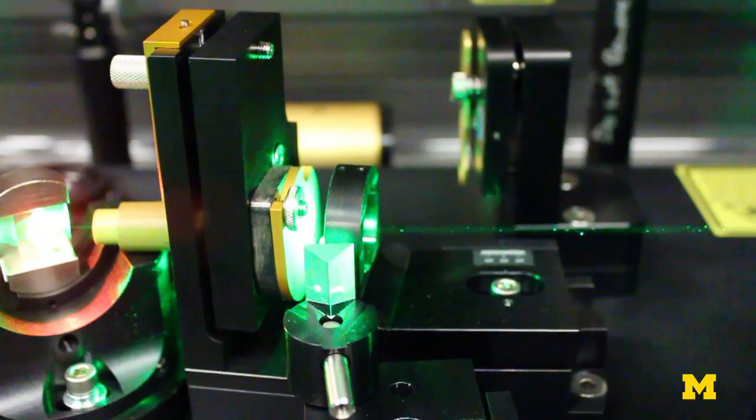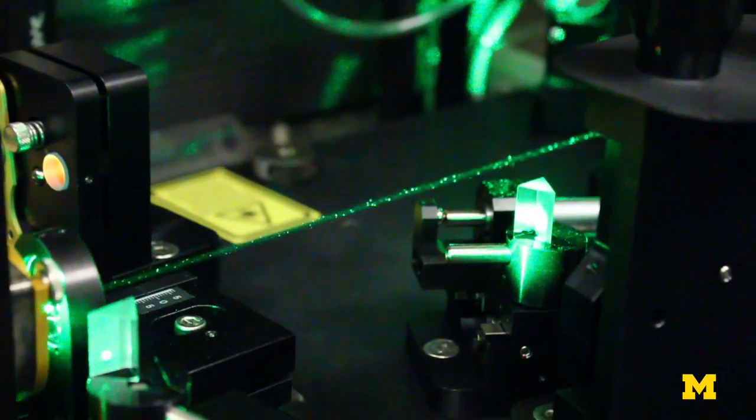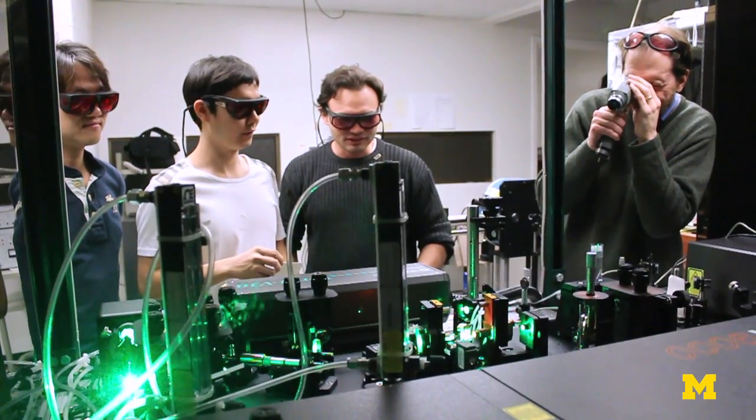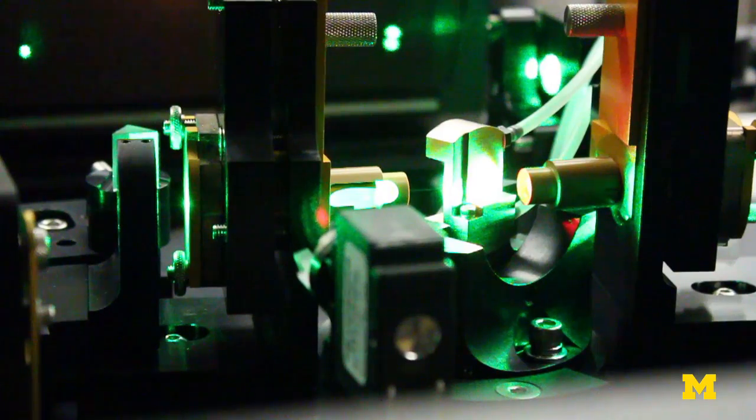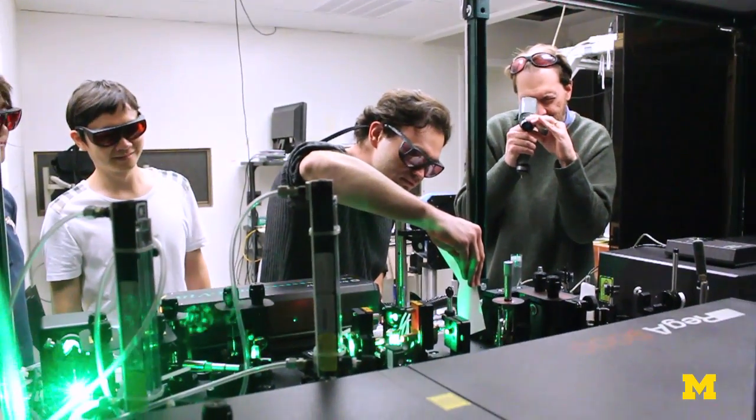So ultrafast optics is the specialty of this lab and is really one of the things that Michigan is very well known for. The Center for Ultrafast Optical Science has been here since 1991 and was an NSF Science and Technology Center for 11 years, and since then has been a College of Engineering interdisciplinary research center.